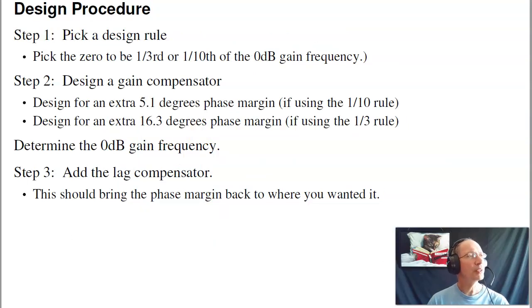The design procedure is step one, you pick a design rule, like pick the zero to be one-third or one-tenth of the zero dB gain frequency. Step two, you design your lead PI compensator, just like you did before, except you design for an extra five degrees phase margin, if you're using this one-tenth rule, or extra 16 degree phase margin, if you're using the one-third rule.